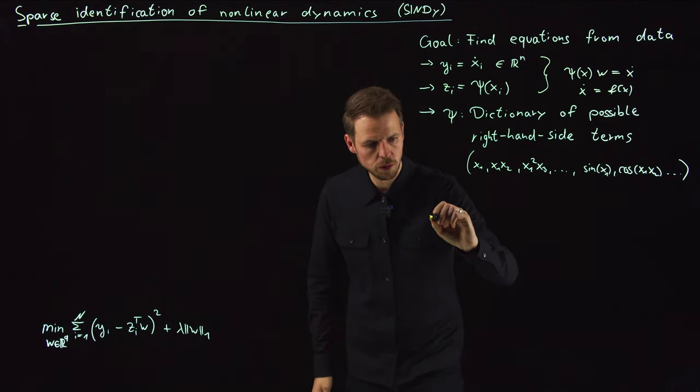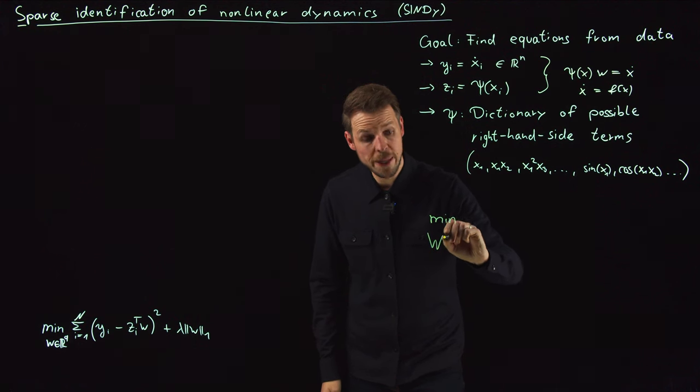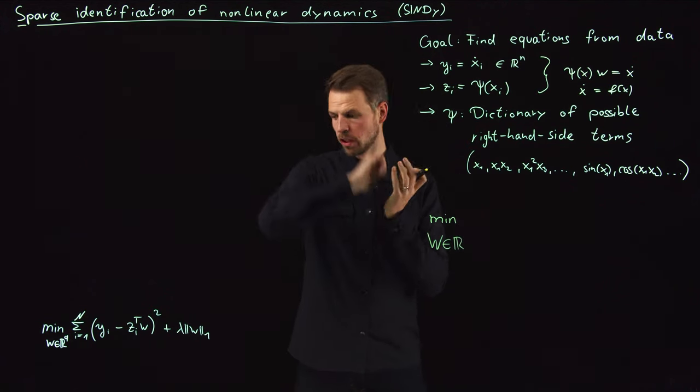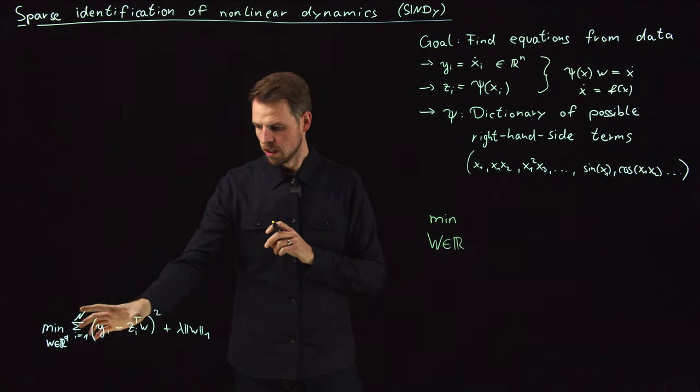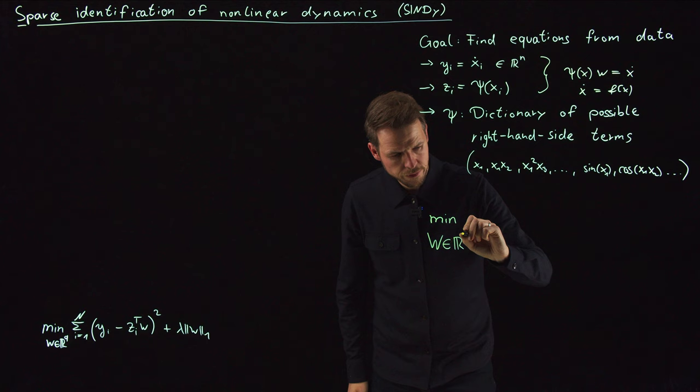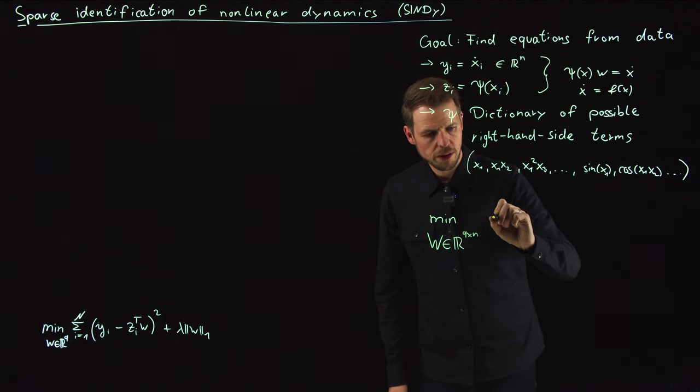What we simply need to do now is, we minimize over a weight matrix now, because we do not have a single output, we have N outputs, so the number of equations. This was always the univariate case, W is now N, if you do it like this, Q times N matrix.